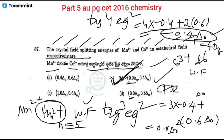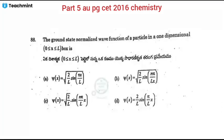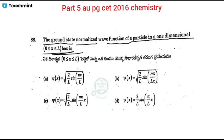Next: the ground state normalized wave function of a particle in a one-dimensional box. The wave function ψ = √(2/L) × sin(nπx/L). For the ground state n=1. Option: root over 2/L × sin(nπx/L) is the correct answer.